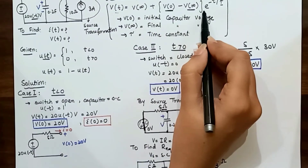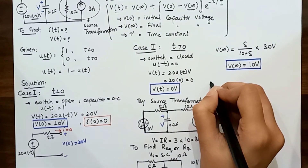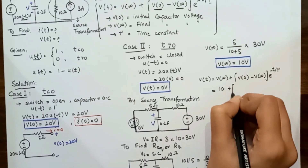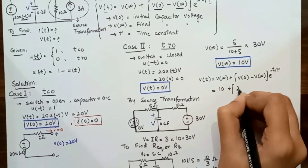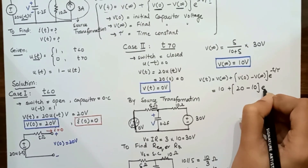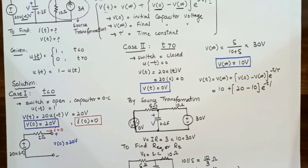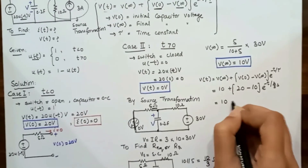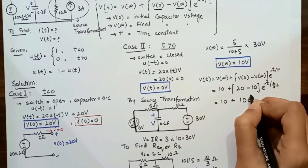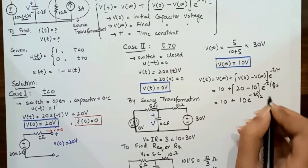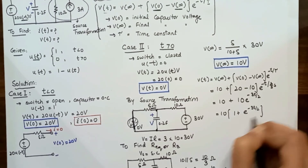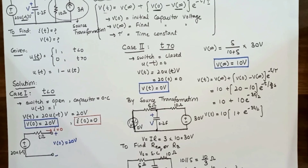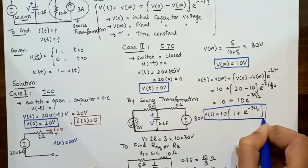Now we find V(t) from the step response equation. V(∞) = 10 V, V(0) = 20 V, and τ = 2/3 s. Substituting: V(t) = 10 + (20 - 10) × e^(-t/(2/3)) = 10 + 10e^(-3t/2) = 10(1 + e^(-3t/2)) volts. This is the voltage in the step response of the RC circuit.